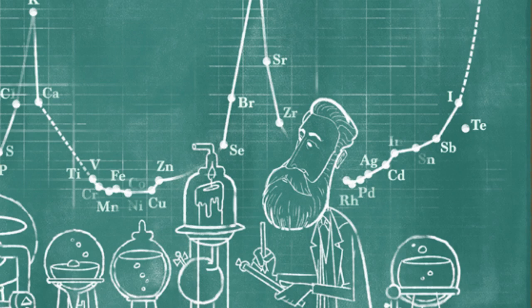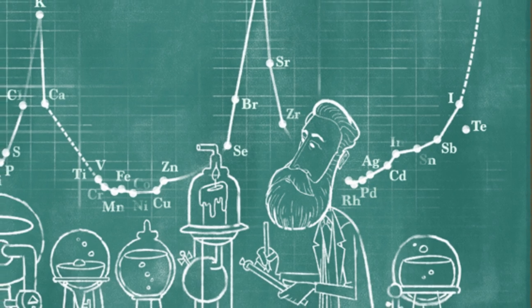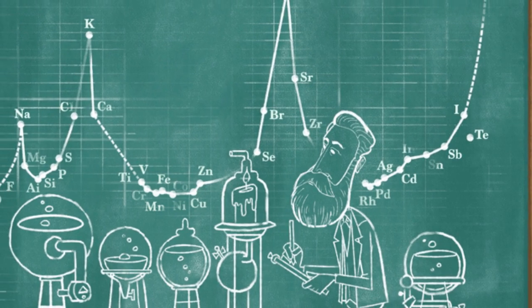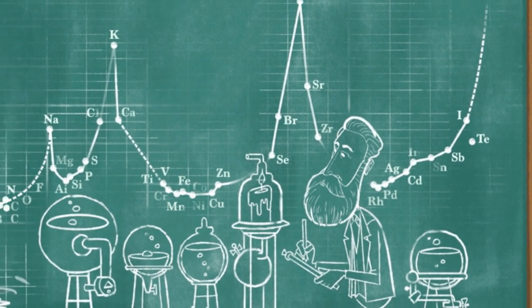Lothar Mayer designed a more comprehensive table in 1868. But before he could publish, Mendeleev released his own paper that placed all the known elements in one table and cemented his place in science history.